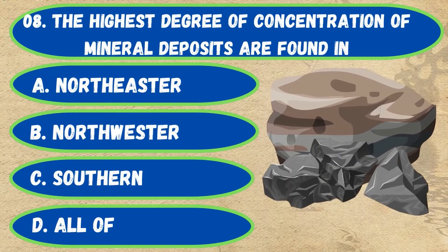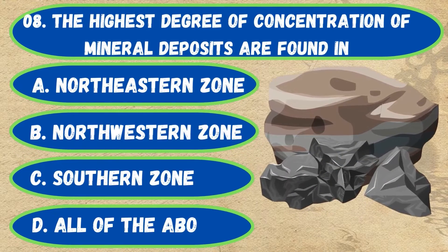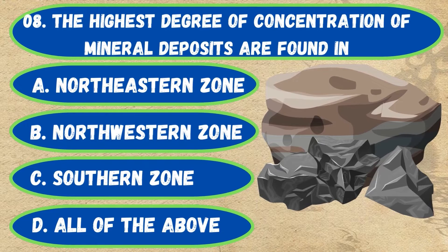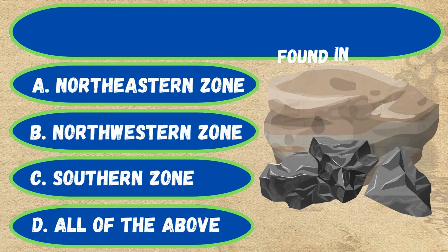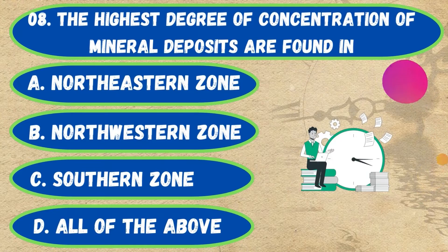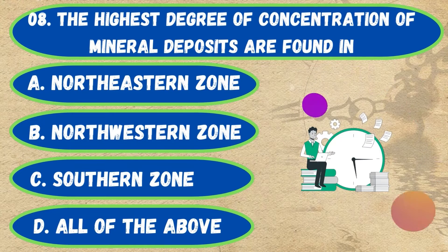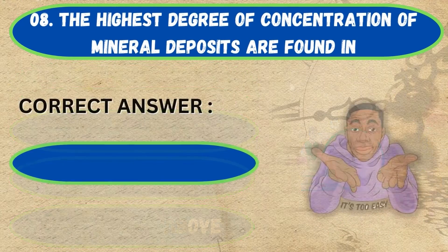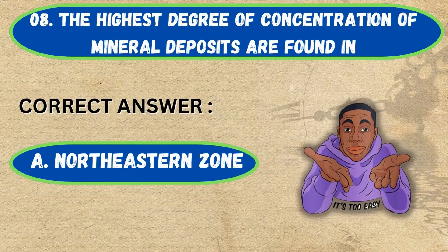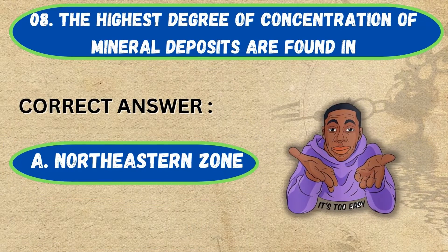Question number 8. The highest degree of concentration of mineral deposits are found in: option A, northeastern zone; B, northwestern zone; C, southern zone; D, all of the above. The correct answer is option A, northeastern zone.